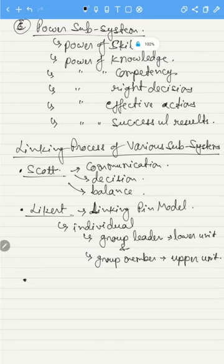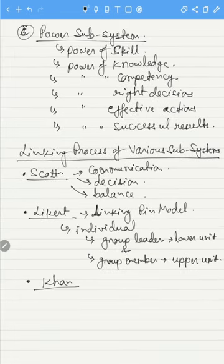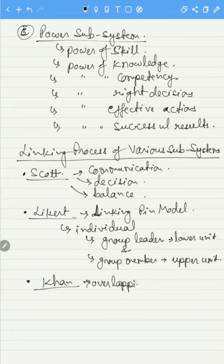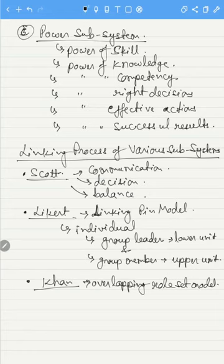Kahn suggested the overlapping role set model. As a position, these roles create interactions with others, and an organization can be viewed as a set of overlapping role sets.